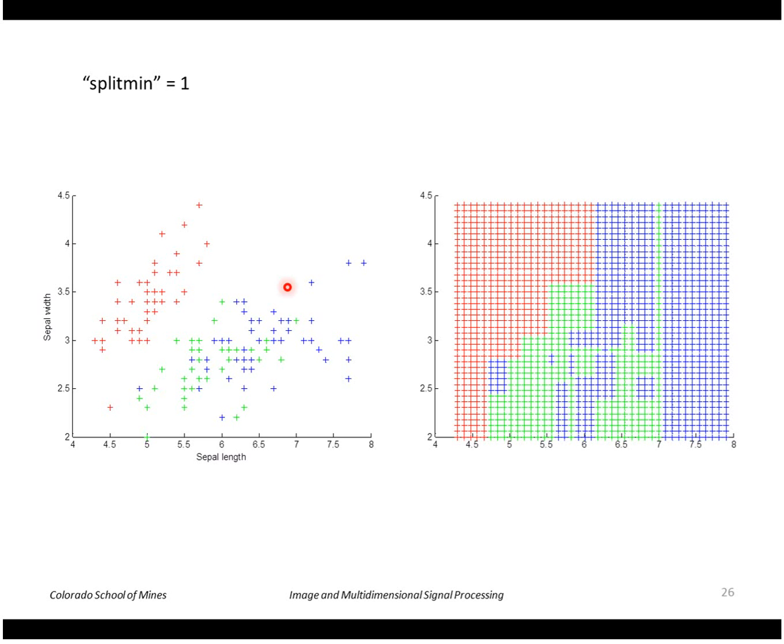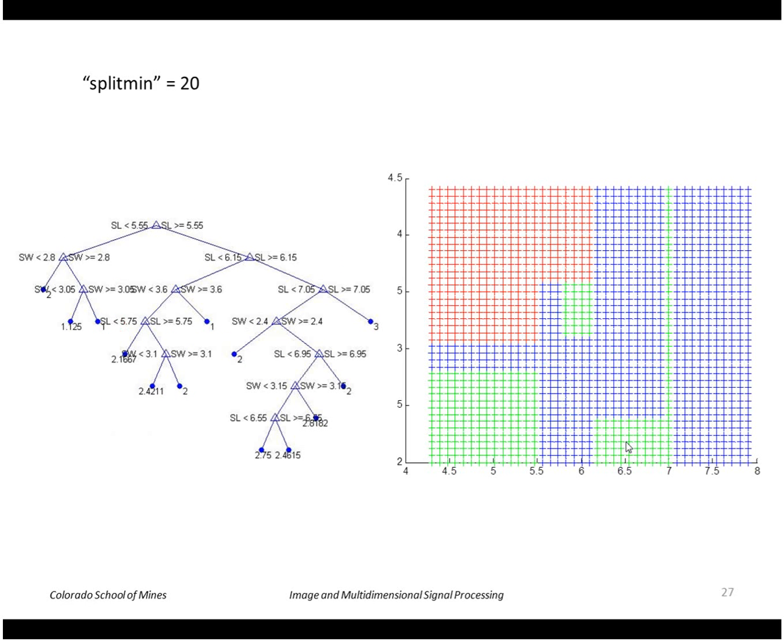For example, this green dot right here is captured by this stripe over here and so forth. Just to experiment with that, we can have more generalization by increasing split_min.